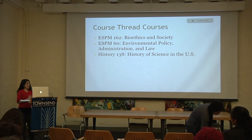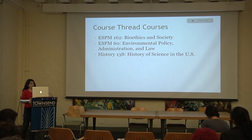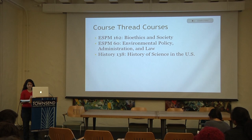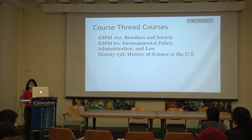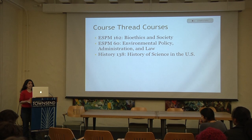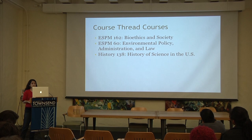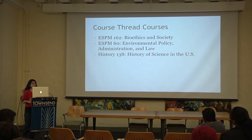The courses I took for this course thread were Bioethics in Society, Environmental Policy Administration and Law, and the History of Science in the U.S. I've used components from all three for my presentation. Bioethics taught me about the assumptions we have about the validity of science and how to challenge them. Policy taught me about institutions and policy-making processes for science. History of Science showed me examples of these and taught me themes surrounding science that extend throughout history, which can be seen in the rise and fall of the eugenics movement.